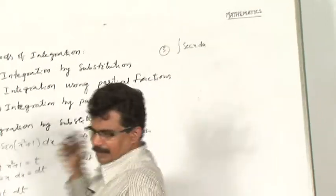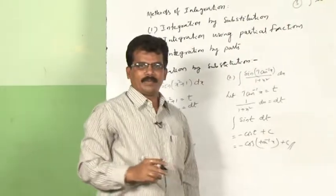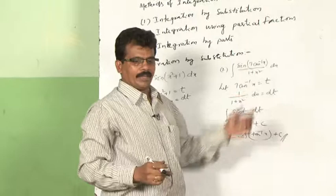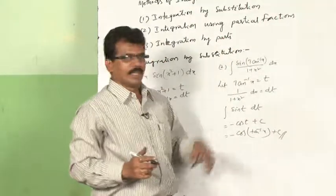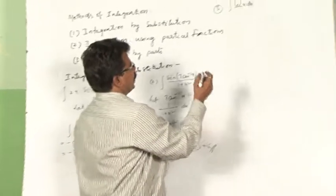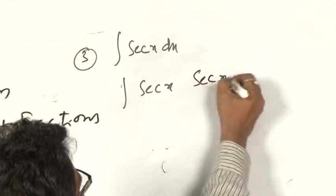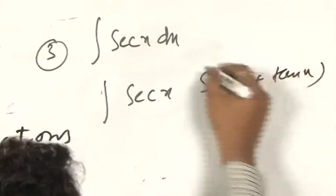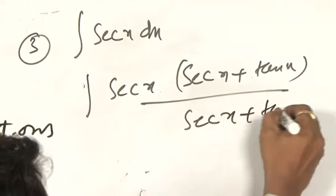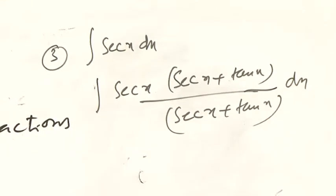Third one: integral of sec(x) dx. In the derivative formulas, the derivative of sec(x) is sec(x)·tan(x). But here, I have not given the integral of sec(x) as a formula in the list. So here we will derive what is the integral of sec(x) dx. We will multiply the sec(x) function with (sec(x) + tan(x)) and divide by (sec(x) + tan(x)). I have multiplied and divided the given function with sec(x) + tan(x). Why have we done this? Now let sec(x) + tan(x) equal to t.